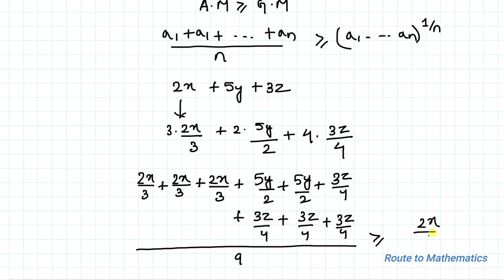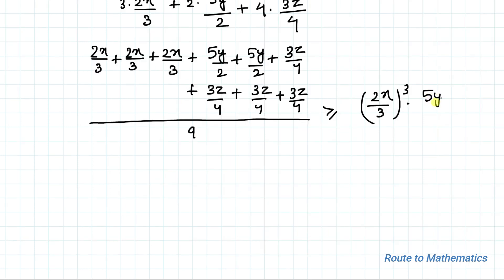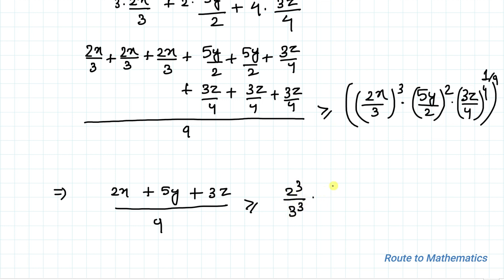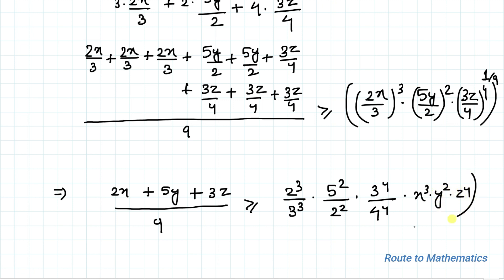We can write the GM side as [(2x/3)³ × (5y/2)² × (3z/4)⁴]^(1/9). This implies that (2x + 5y + 3z) / 9 is greater than or equal to [2³/3³ × 5²/2² × 3⁴/4⁴ × x³y²z⁴]^(1/9), where x³y²z⁴ equals 7.